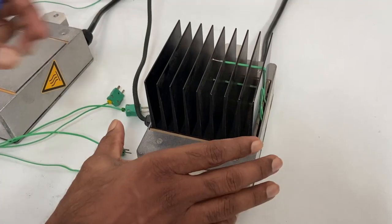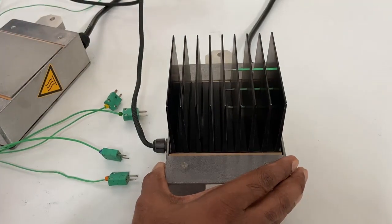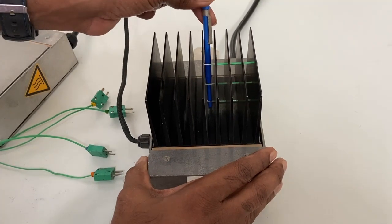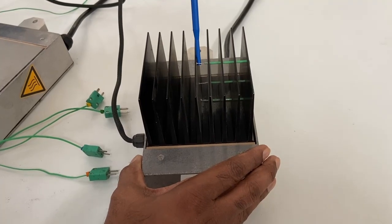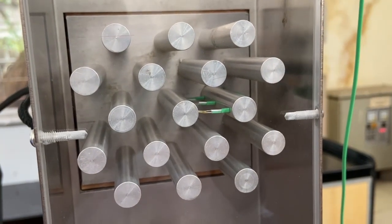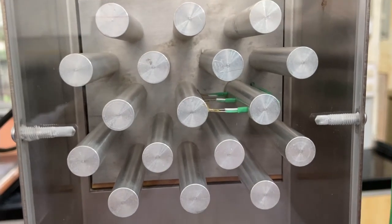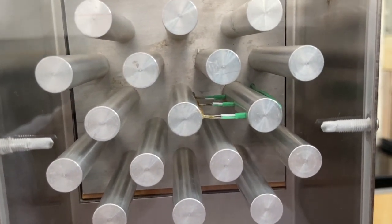For the extended surfaces, we have three additional measurements along the extension. T4 which is close to the base, T5 at the midpoint and T6 at the edge. Similarly, for the finned heater, we have three thermocouples connected to the central fin. T4 at the bottom, T5 at the mid and T6 at the top edge.